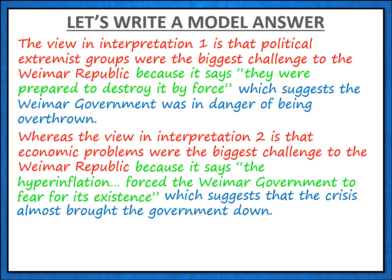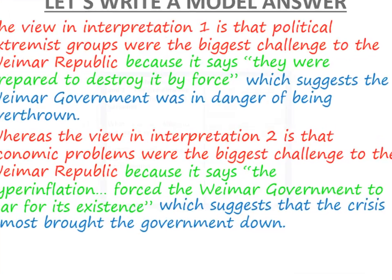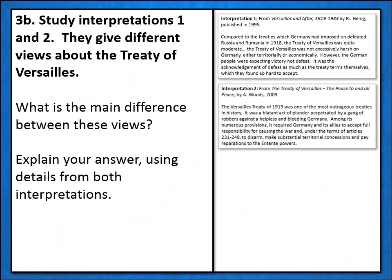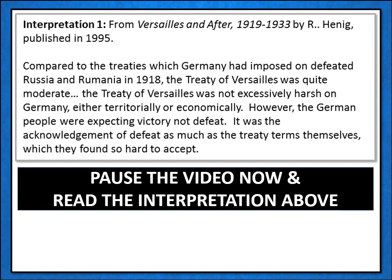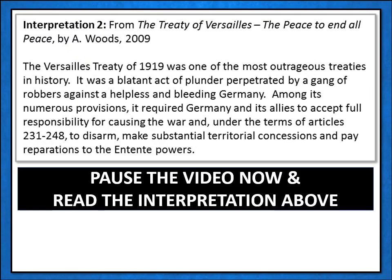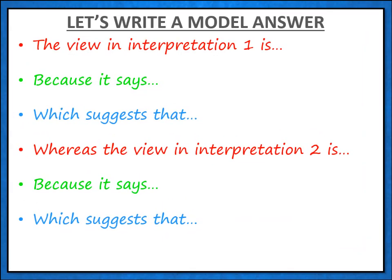And that's it — job done, four marks out of four. Now, if you want to try this for yourself, here's another question you could work on. This time we're being asked to study interpretations 1 and 2, which give different views about the Treaty of Versailles, and we're asked what the main difference is. Here's interpretation 1 — you can pause the video now to read it. And here's interpretation 2 — again, you might want to pause the video here. When you've had a chance to read both interpretations, have a go at writing a model answer for yourself. Here are the sentence starters you need — try and follow this format.